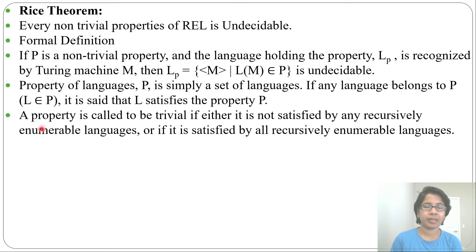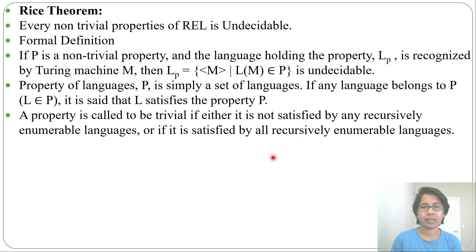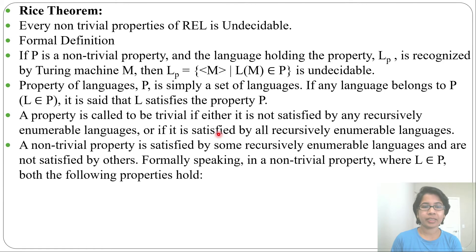Now let's understand the difference between trivial and non-trivial properties. A property is called trivial if either it is not satisfied by any recursively enumerable language, or it is satisfied by all recursively enumerable languages.